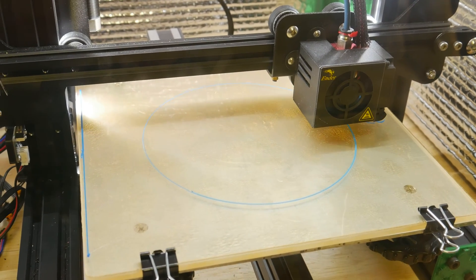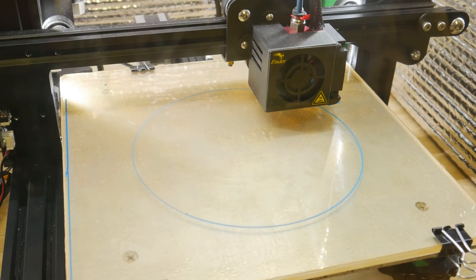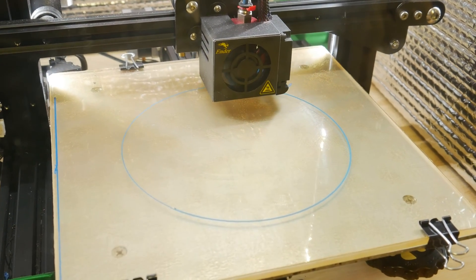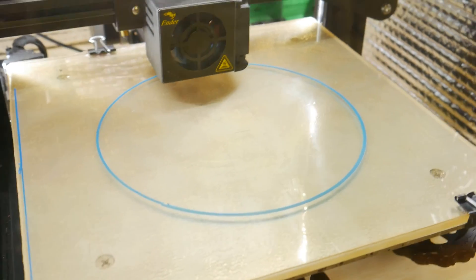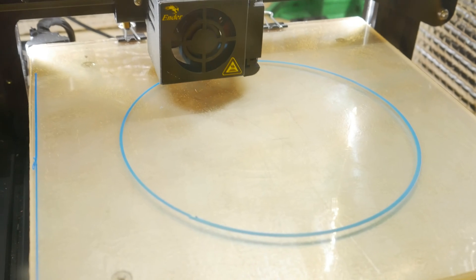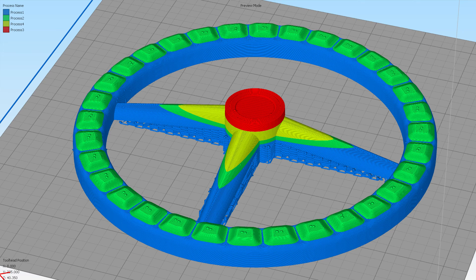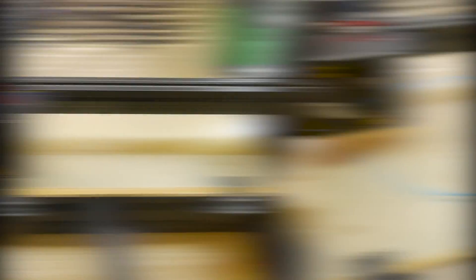Let's see if we have any bed leveling problems here. Doing a circle is a great way to tell if you are adhering to the bed properly. This is going to be a 7 plus hour print done in four separate sections. I forget if I oversized that to 106%. Got to go check.